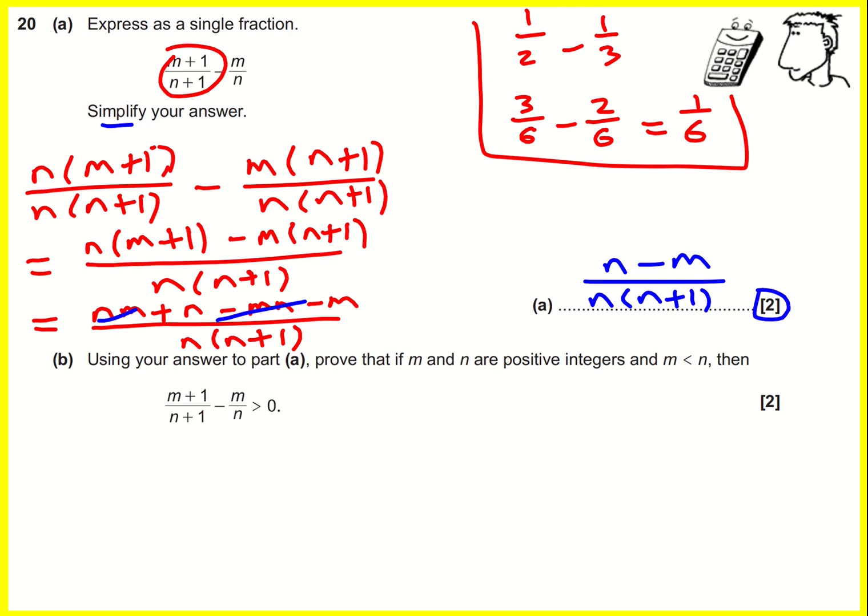How can we use that to prove that if m and n are positive integers, and m is less than n, then this is true?